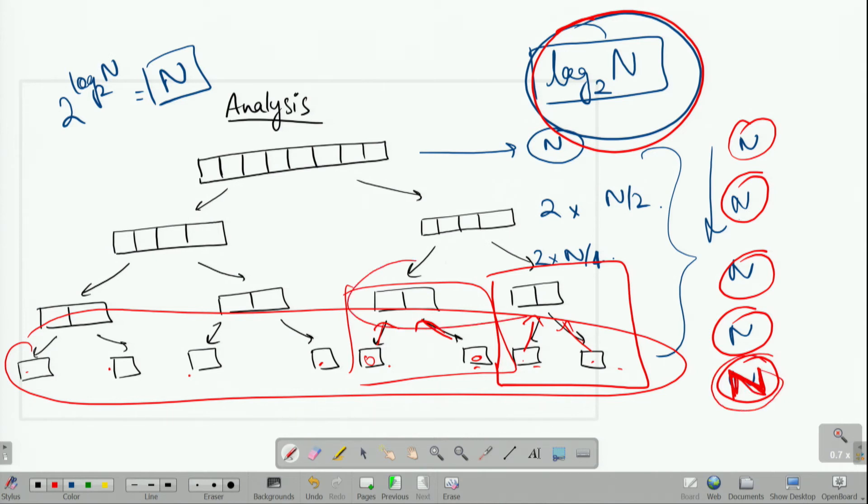At a level higher, even though we have less number of combine calls to do, we have to combine larger arrays of two elements each. Here again, when we combine, we need to look at n elements.